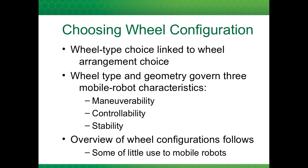There are three robot characteristics that are governed by the combination of wheel type and geometry: maneuverability, controllability, and stability. We'll briefly look at these concepts.